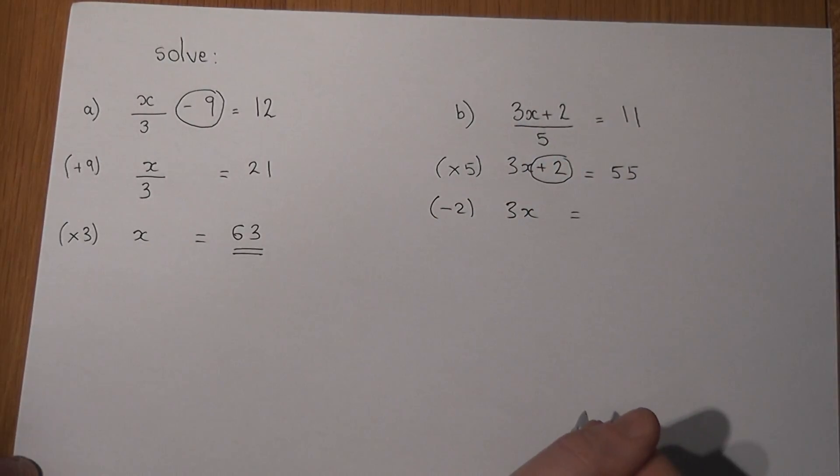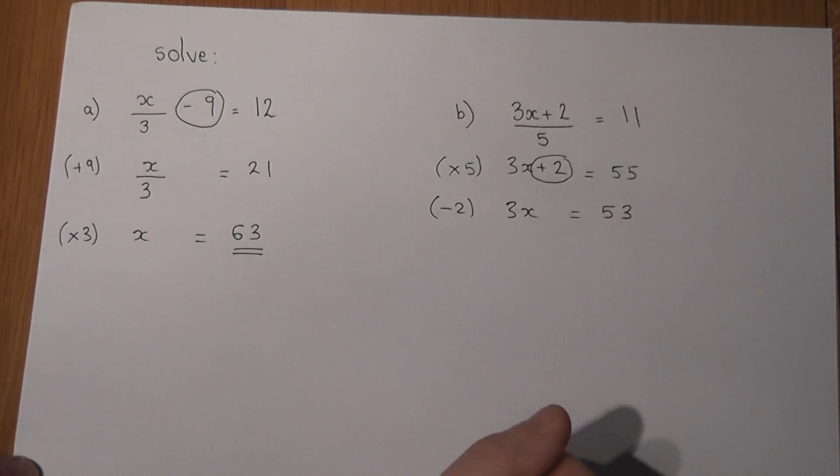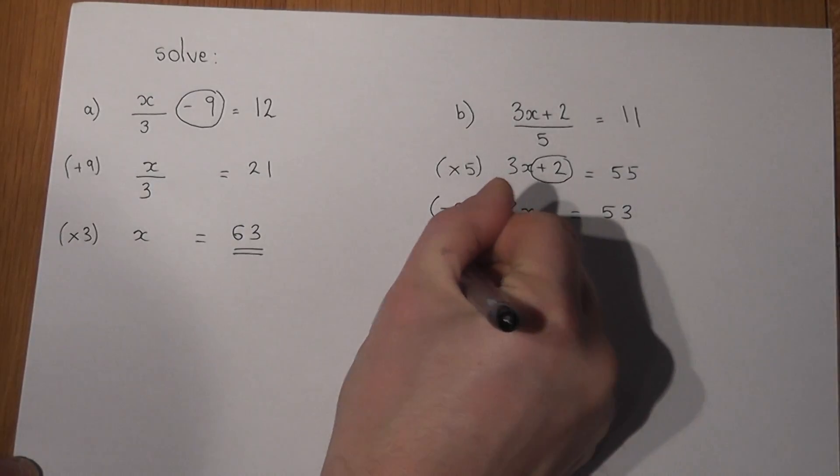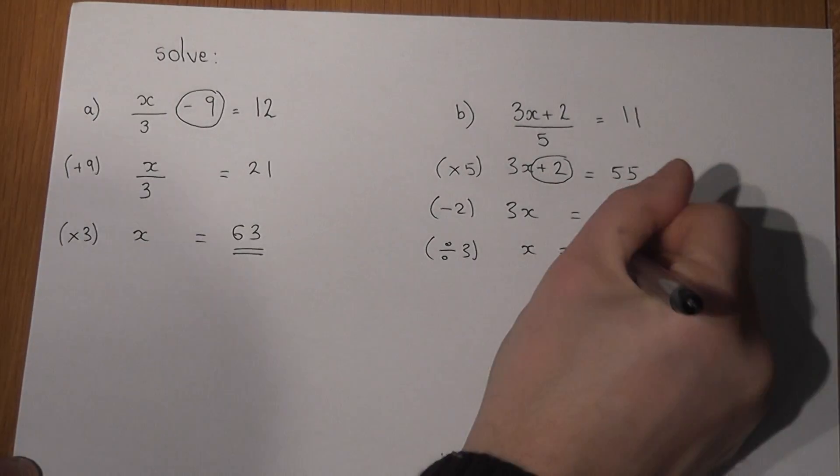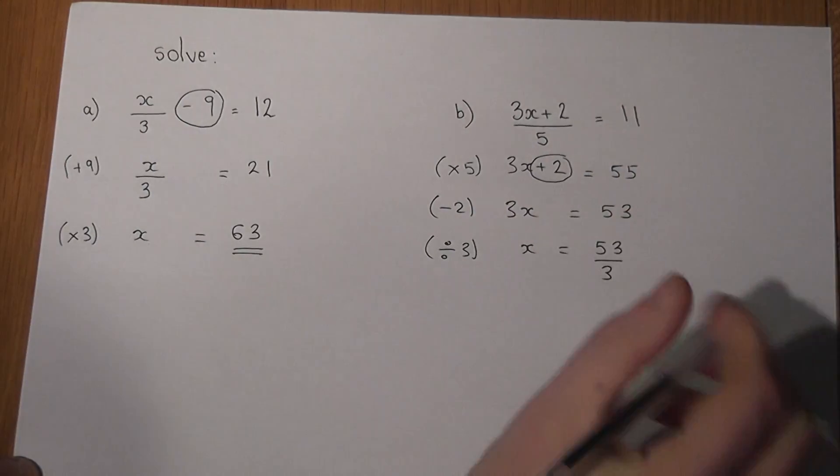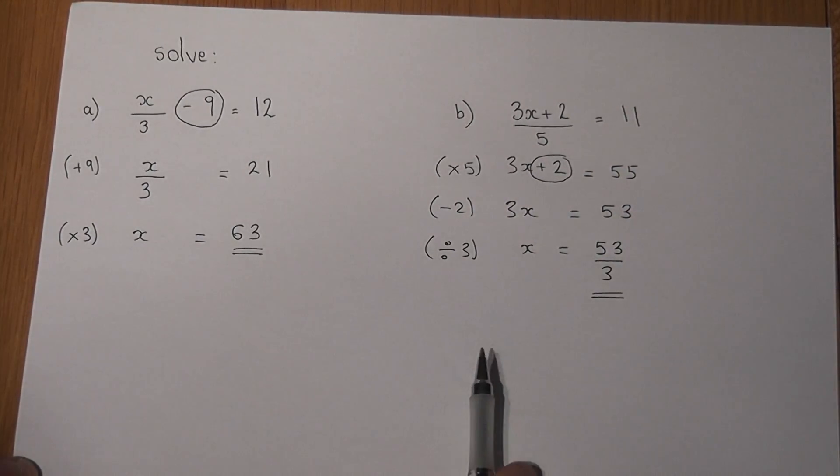Then to finish off I've got 3x equals 53. If I then divide by the 3, I'm left with x is equal to 53 over 3, which I will leave as a fraction for this particular question.